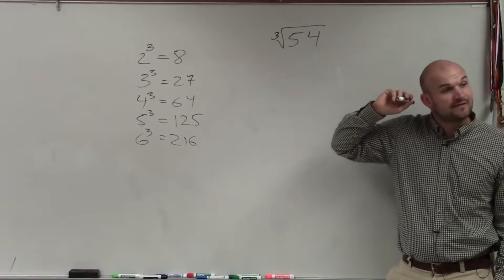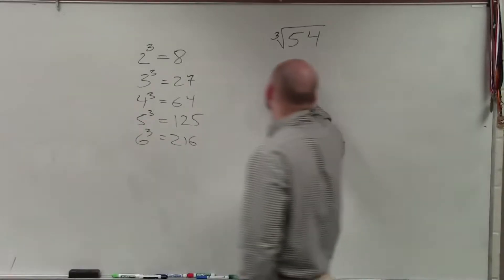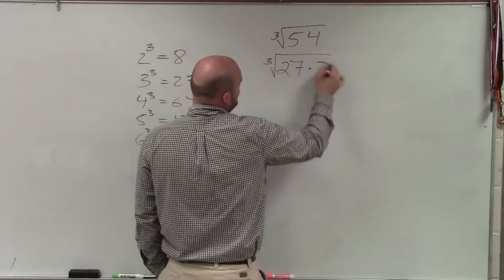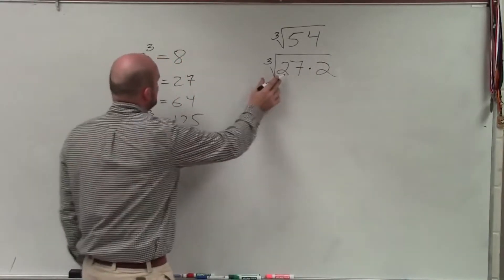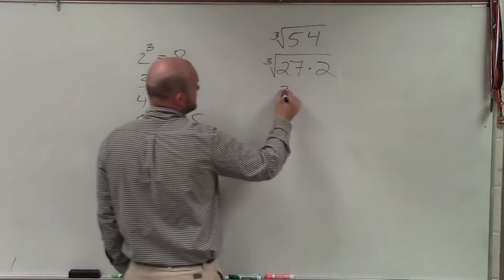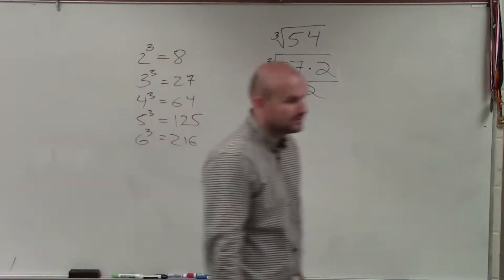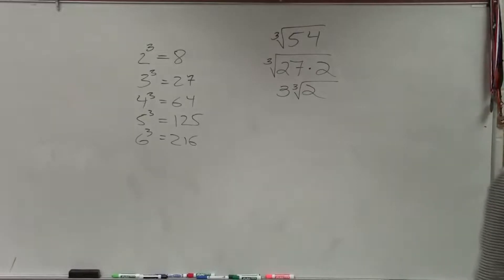27. Yeah, 27, and it goes in there twice. So what I can do is rewrite this as a cube root of 27 times 2. Now I know the cube root of 27, that's 3 times the cube root of 2. And I can't simplify the cube root of 2, so that's just going to remain as 2.